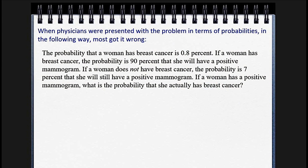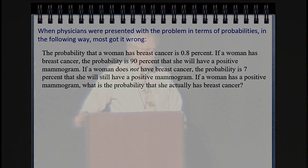There's a statistician in Germany who actually did this experiment and proposed it to doctors. When he proposed it in this way, they couldn't figure it out. The probability that a woman has breast cancer is 0.8%. The mammogram is 90% accurate — if she has it, the probability is 90% that it will be detected. If a woman does not have breast cancer, the probability is 7% that she'll still have a positive mammogram. So if a woman tests positive, what's the probability that she actually has breast cancer?